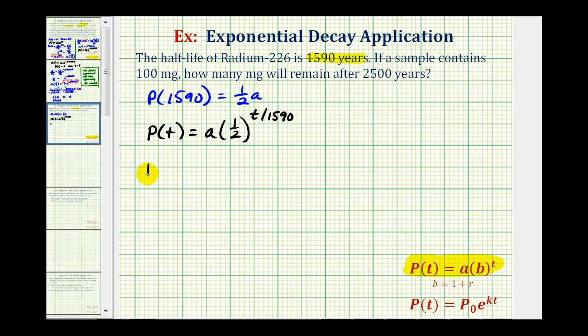So we need to evaluate p of 2,500, and the initial amount, or a, is equal to 100, and the time is 2,500, so the exponent is 2,500 divided by 1,590.